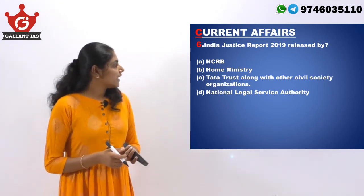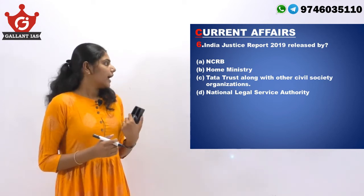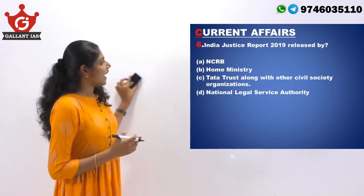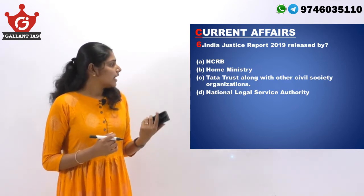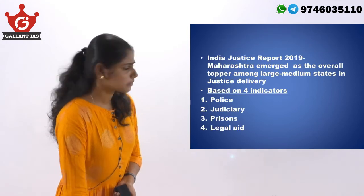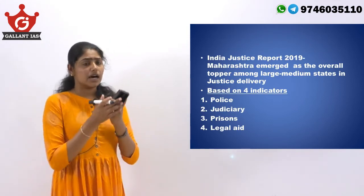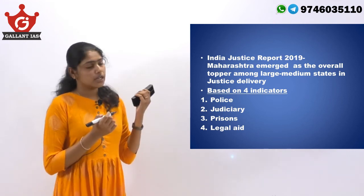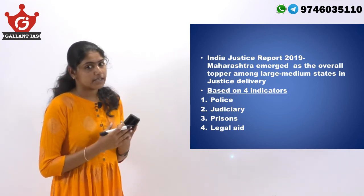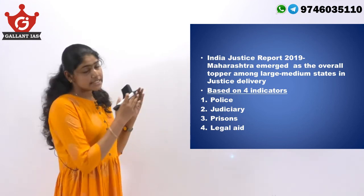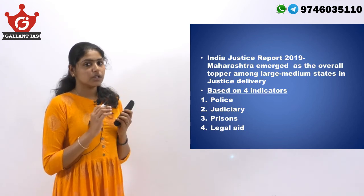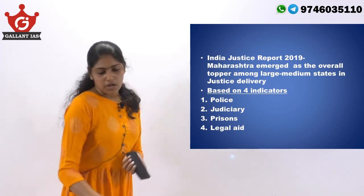A current affairs question: the India Justice Report 2019 was released by Tata Trust along with other civil society organizations — not by NCRB, Home Ministry, or the National Legal Service Authority. This report was released considering four pillars: police, judiciary, prisons and legal aid, and examines how the justice delivery system is working in the country. In the 2019 report, Maharashtra was among the top in the list of large and medium states with good justice delivery systems. That's all for today — see you tomorrow.